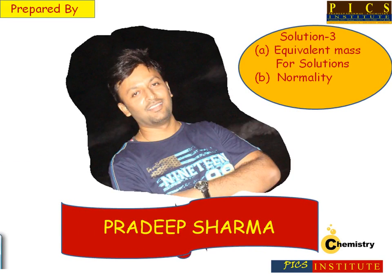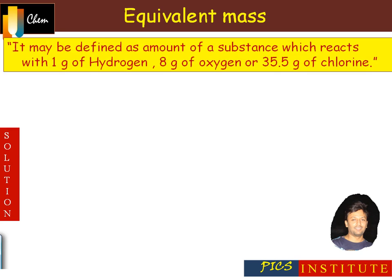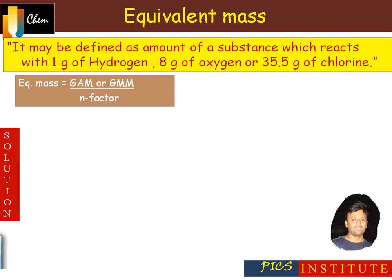In this video lecture, we will understand about equivalent mass for solutions and normality. Equivalent mass may be defined as the amount of a substance which reacts with 1 gram of hydrogen, 8 gram of oxygen, or 35.5 gram of chlorine. The formula for equivalent mass is gram atomic mass or gram molecular mass divided by n-factor.